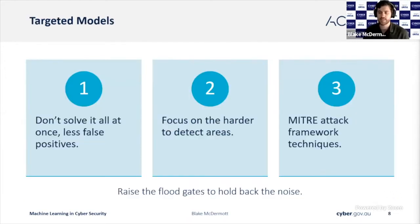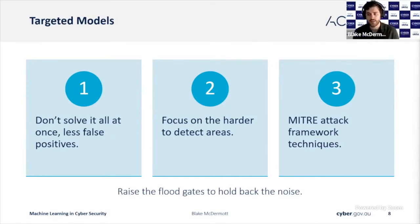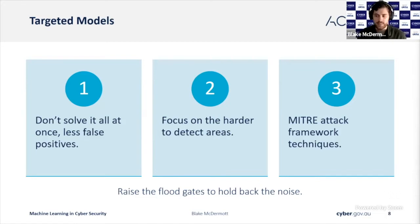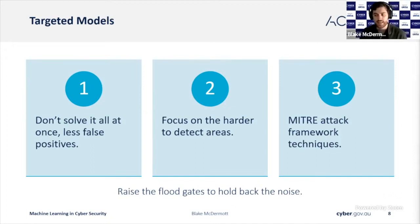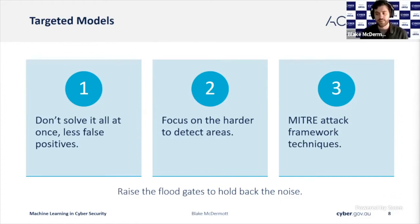Using targeted models, we can help reduce false positives. Rather than trying to capture everything in one model, we can design curated models to help spread the load. These models can help our analysts in the hardest to detect areas — for example, if we were looking for a single module load within a single process, that can be extremely difficult for our analysts without a starting point. We can curate these models around the MITRE ATT&CK framework, ensuring that we're monitoring every phase of the kill chain.